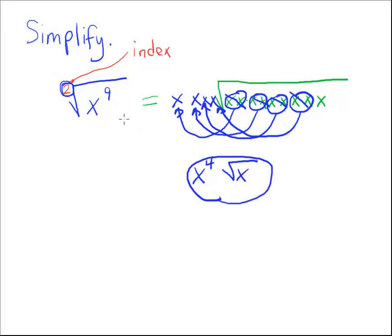So there, you just simplified the square root of x to the 9th. You can write that as x to the 4th radical x. All right, let me do one more for you. What if the original problem looked like this?